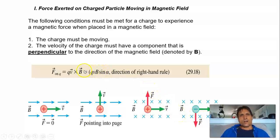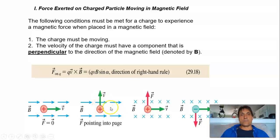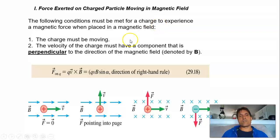Mathematically, these experimental statements are expressed as a cross product. The force on a moving charge q depends on the charge, the velocity, and the magnetic field. It's F = qvB times the sine of the angle between v and B. Since sine is biggest for theta equals 90 degrees — sine of 90 is 1 — the force is biggest when the velocity is perpendicular to the magnetic field. So the force on a moving charge is F = qvB sine(alpha), analogous to qvB but with the magnetic field.